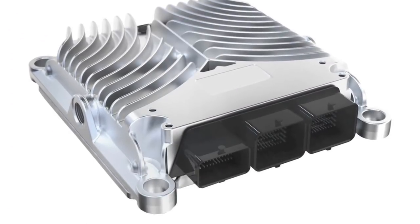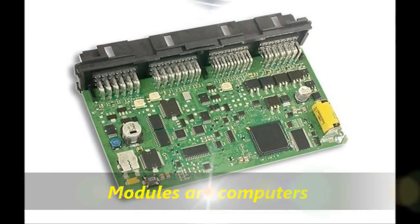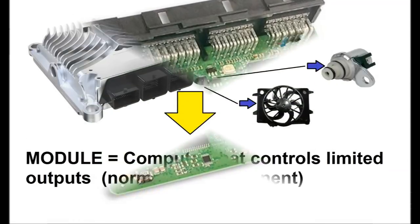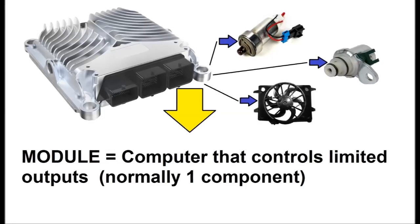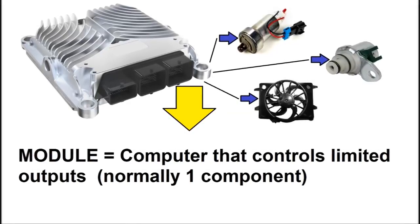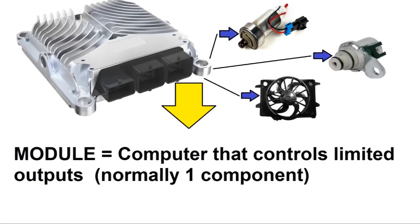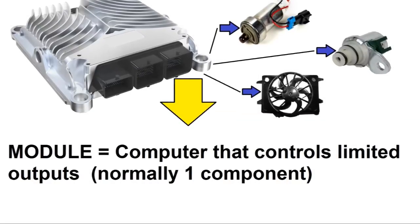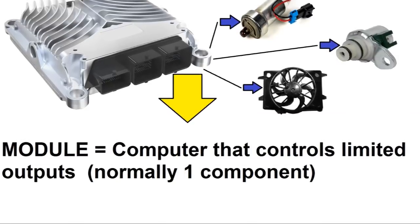On screen, we can see a typical module. A module is a computer. The difference between a module and an ECM is that a module usually controls, in automotive applications, one component at a time — a motor, a solenoid, and so on. A module tends to control one piece of hardware at a time, but all in all, a module is a computer.